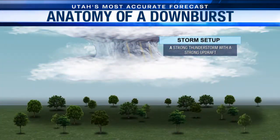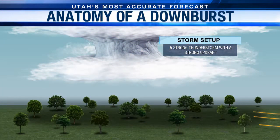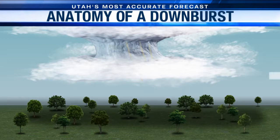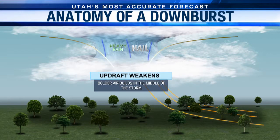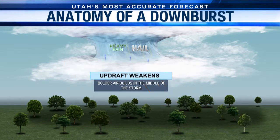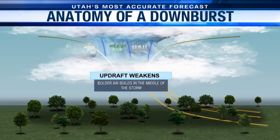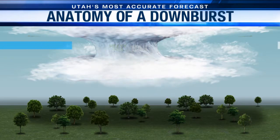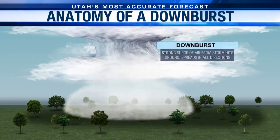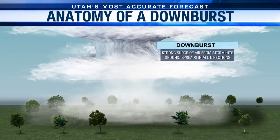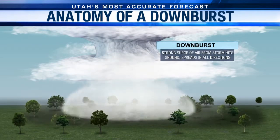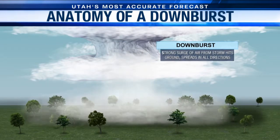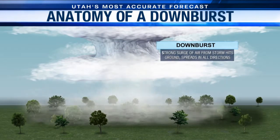Storms have a strong updraft. This is when rain starts to form in the cloud. Then the updraft starts to weaken as rain falls, which allows cold air to build up in the middle of the storm. Updrafts fuel a storm, and downdrafts kill it.